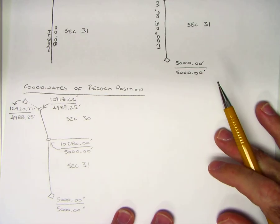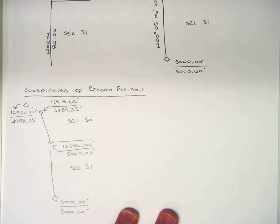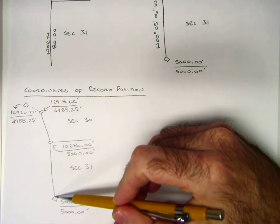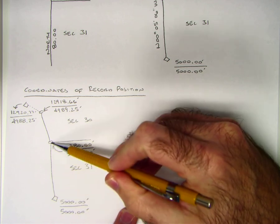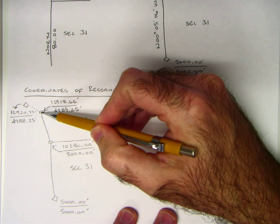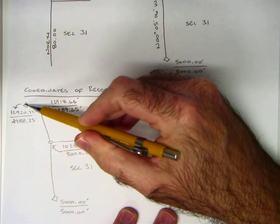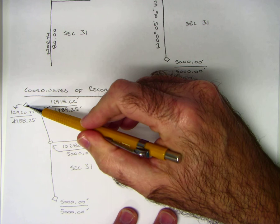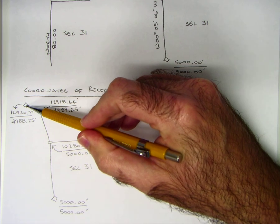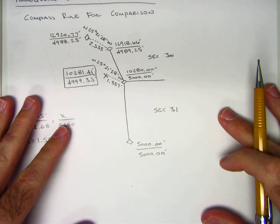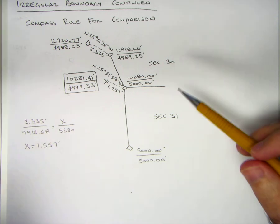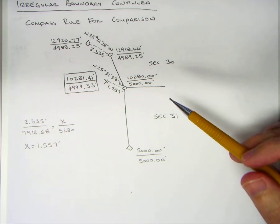One thing that I do want to show is that in BLM language what they would do is they would start at this corner, run the record, set a temporary point, run the record, set another temporary point and then denote the falling between the temporary point and the actual found corner.